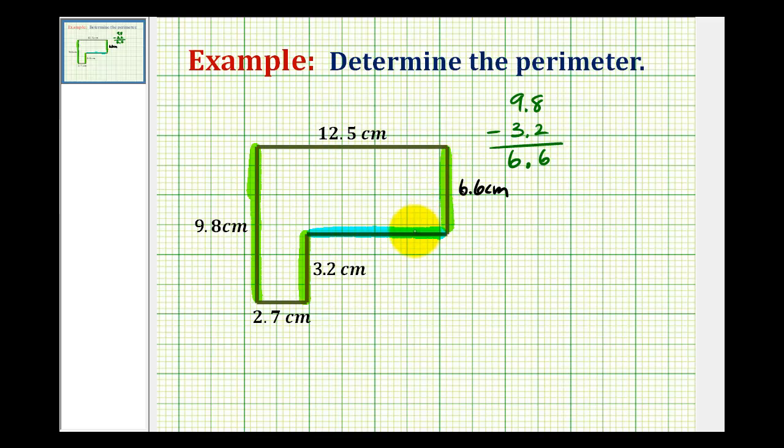Now we can use a similar process to determine the length of this blue side here. If the length of this side is 12.5 centimeters, it would have to be the same length as this side here plus the length of the missing side. So if we take this entire length here of 12.5 centimeters and subtract 2.7 centimeters, it'll give us the length of this missing side here.